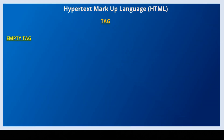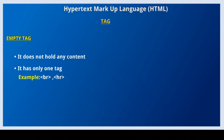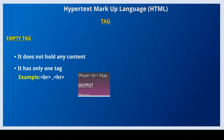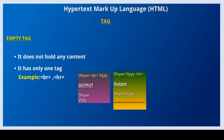Empty tag: empty tag does not hold any content. It has only one tag. For example, BR tag, HR tag, etc. BR tag is used for breaking a line. An HR tag is used for inserting a horizontal line. That is, empty tag has only one tag.